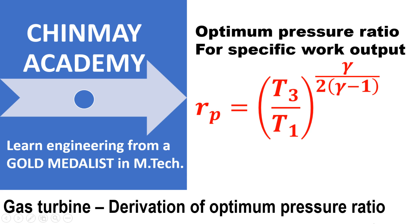In this video, we'll see the important derivation in the case of gas turbine or Brayton cycle efficiency. Here we have to derive the expression for the optimum pressure ratio for specific work output. Specific work output is nothing but the work obtained per kg of air. Let us start with our derivation.